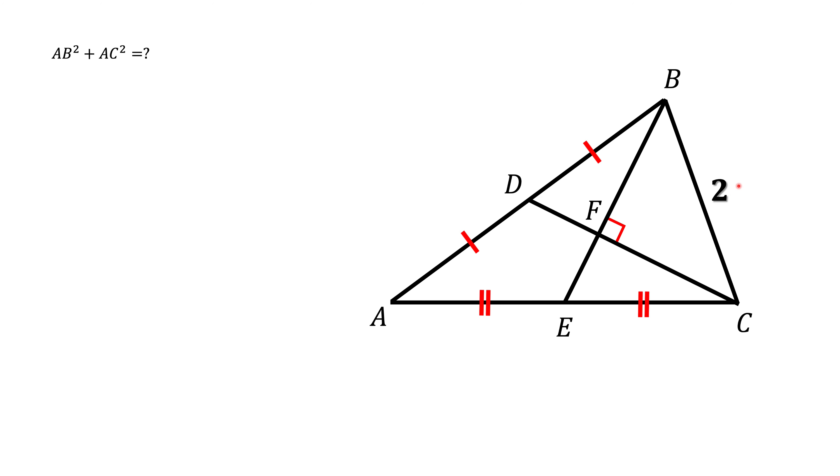There are also two side bisectors, BE and CD, which intersect each other at 90 degrees. And we are asked to find AB squared plus AC squared.